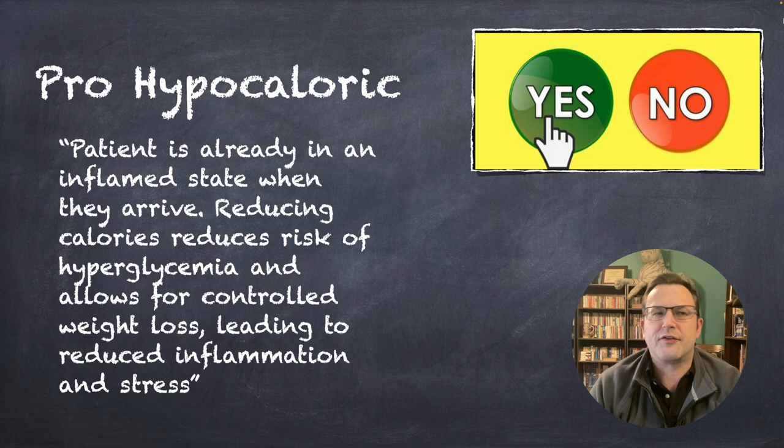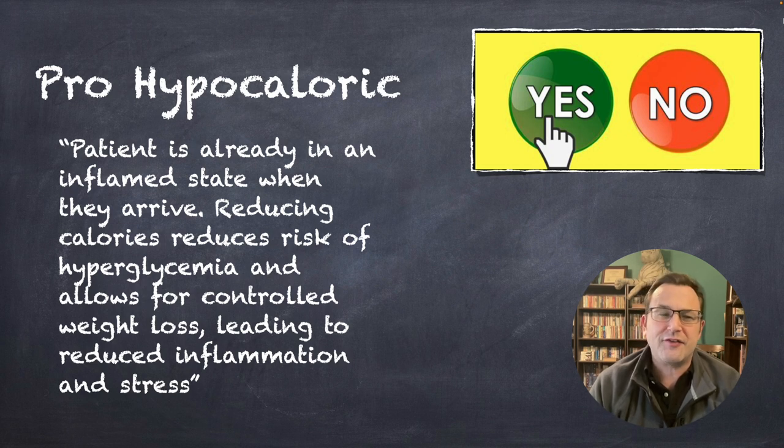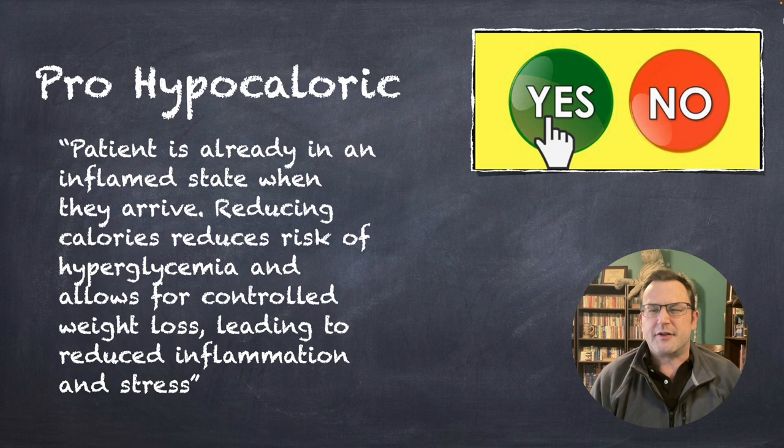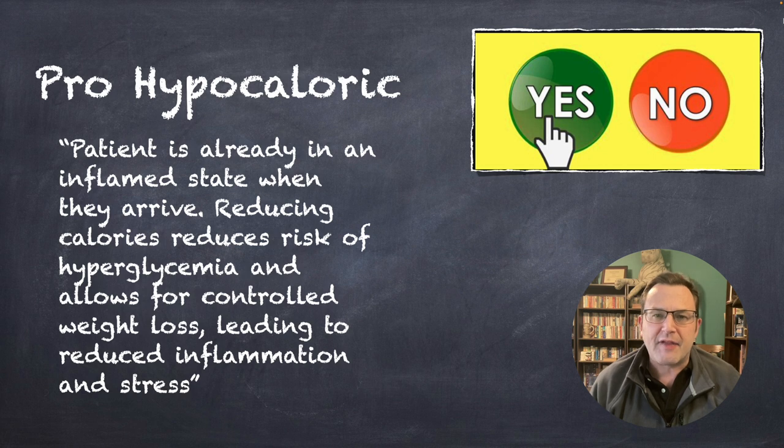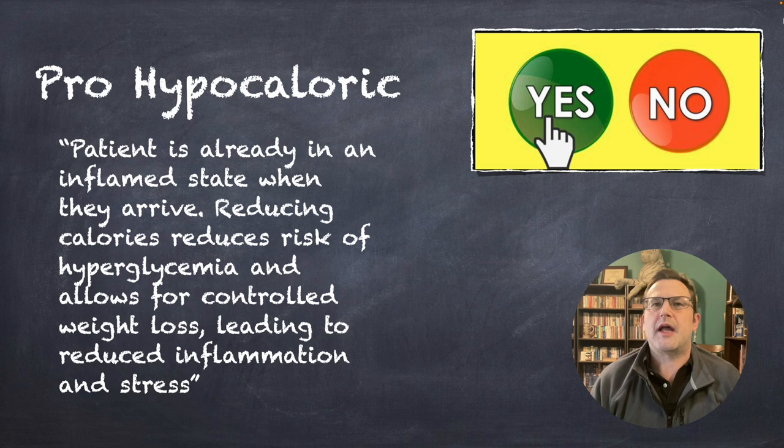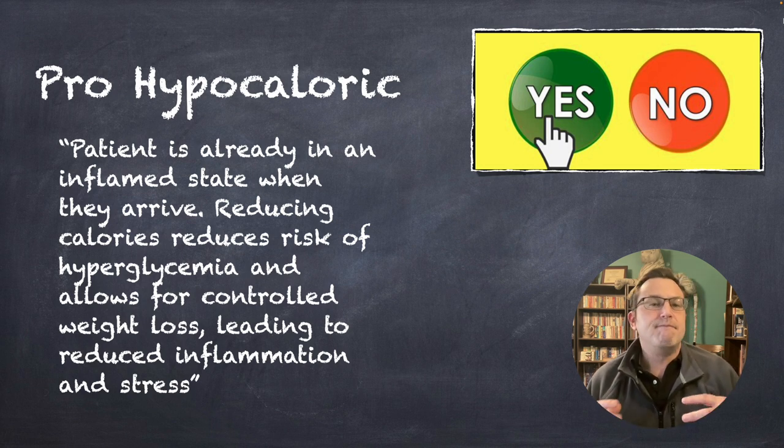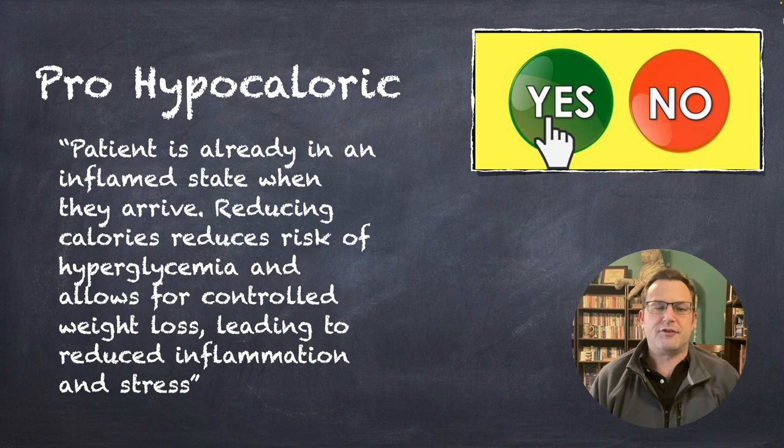So, what's the pro on this? The pro-hypocaloric group is saying that the patient's already in an inflamed state, and reducing calorie provision—this is typically done in a nutritionally supported state, like enteral—helps control the glucose range without needing to provide insulin for the patient. It allows for more tight control of glucose. Maybe it reduces some weight. Maybe it reduces some inflammation and stress.